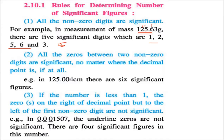The second rule says all the zeros between two non-zero digits are significant. So in a number with two zeros between two non-zero values, there is no matter where the decimal point is. In that case, we have 6 significant figures because the zeros are between two non-zero digits.